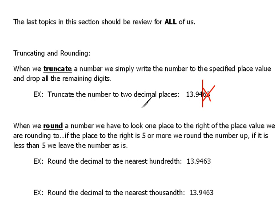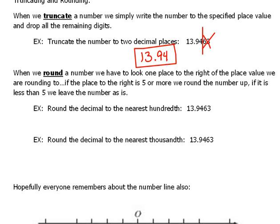Now that is different than rounding. When we round a number, we have to look to the right of the place value. If the number to the right is five or more, that tells us we have to round up. If it is less than five, then we leave it alone.